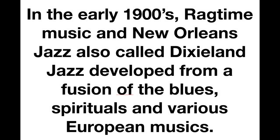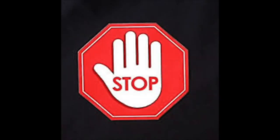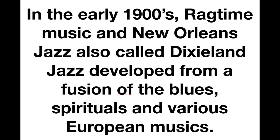In the early 1900s, ragtime music and New Orleans jazz — also known as Dixieland jazz — developed from the fusion of the blues, spirituals, and various European musics. We need to stop and think about what was just said. In the early 1900s, ragtime music and New Orleans jazz, also called Dixieland — the style of music we are studying right now — developed from a fusion of the blues, spirituals, and various European musics. If you think back to our last video, the genesis of jazz part one, we discussed how the blues and ragtime were coming together with music from the Southern Baptist Church — this call and response. After this segment on slave music, we are going to discuss the European music influence on early jazz.